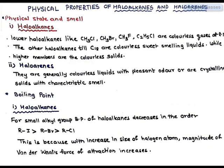Let us discuss physical state. Haloalkanes like methyl chloride, methyl bromide, methyl fluoride, and ethyl chloride, basically lower haloalkanes, are colorless gases at room temperature. The other haloalkanes, till carbon number 18, are colorless sweet smelling liquids, while the higher members are colorless solids.